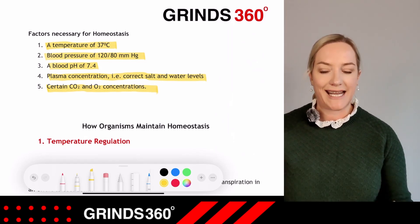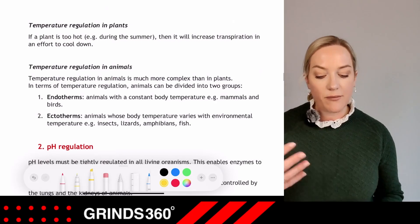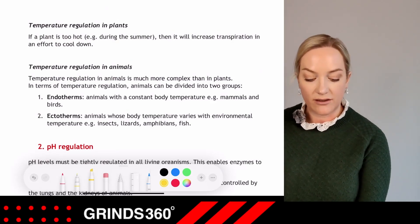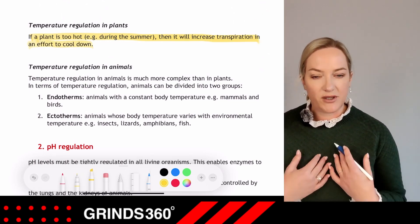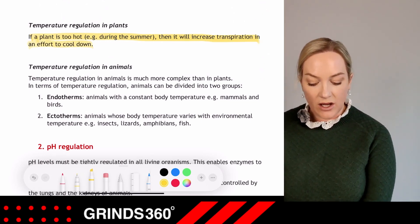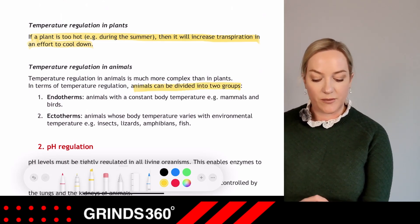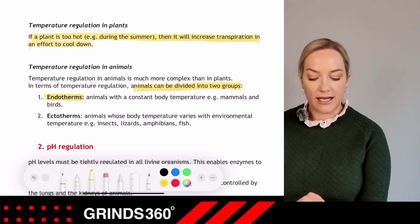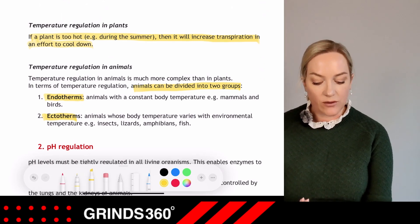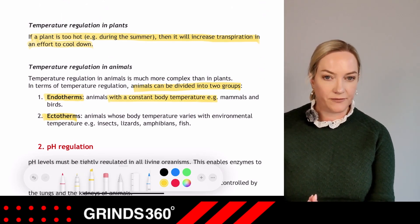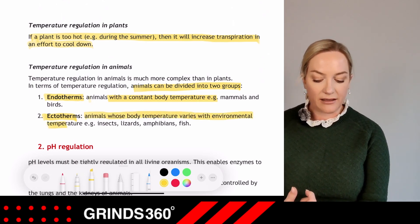How do organisms maintain homeostasis? Looking at temperature regulation first: in plants, if a plant is too hot during summer it will increase transpiration in an effort to cool down. In animals, temperature regulation is more complex. Animals can be divided into two groups: endotherms, which are animals with a constant body temperature, and ectotherms, whose body temperature varies with environmental temperature.